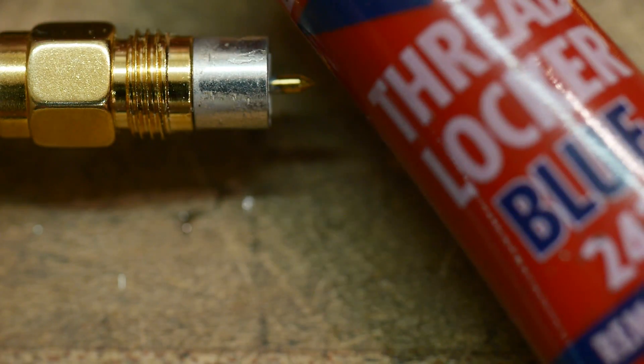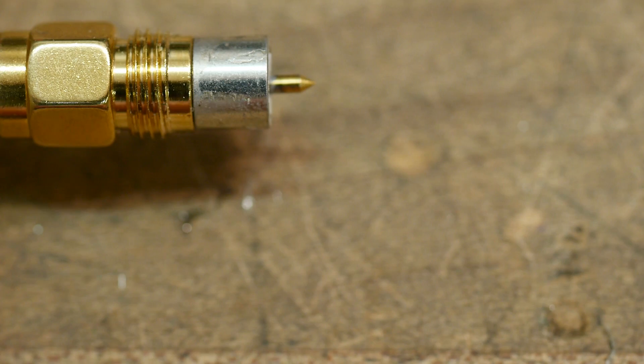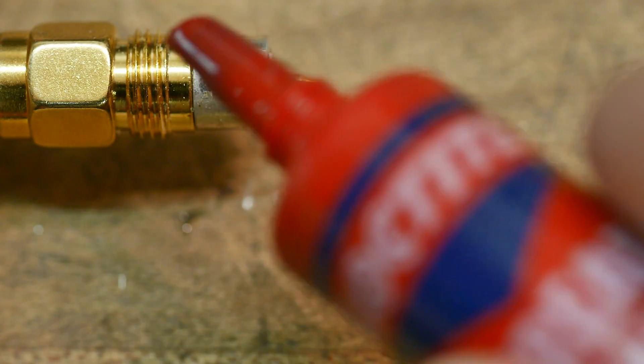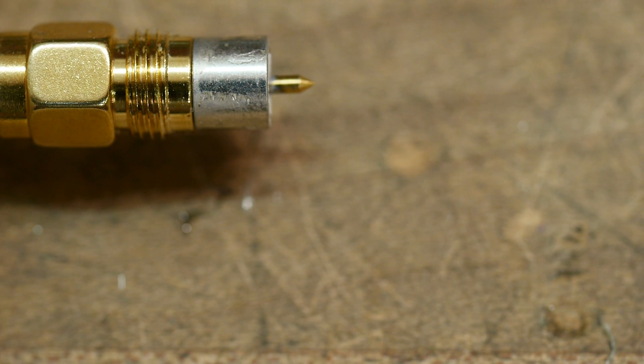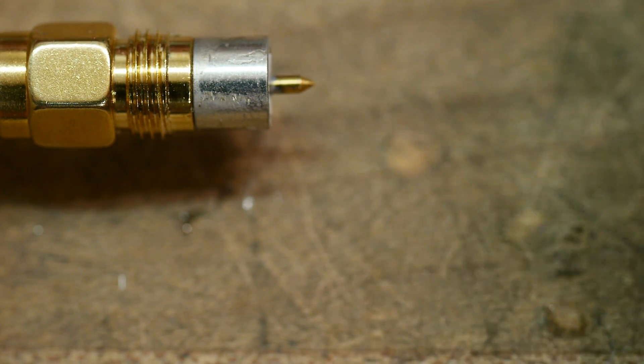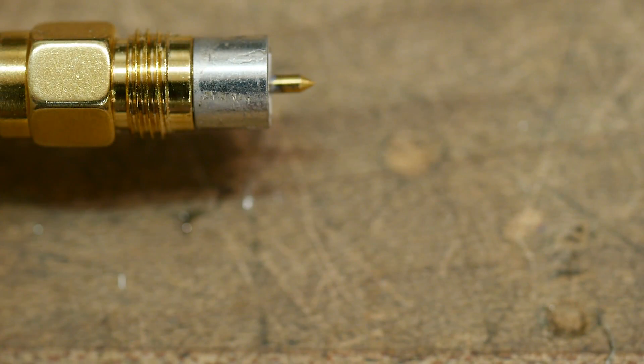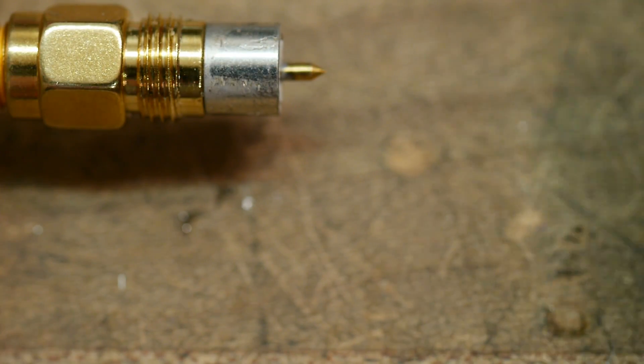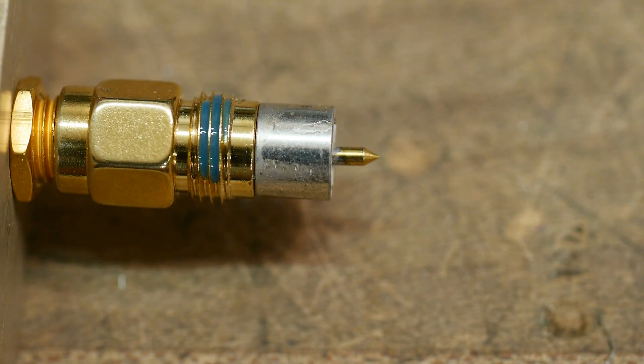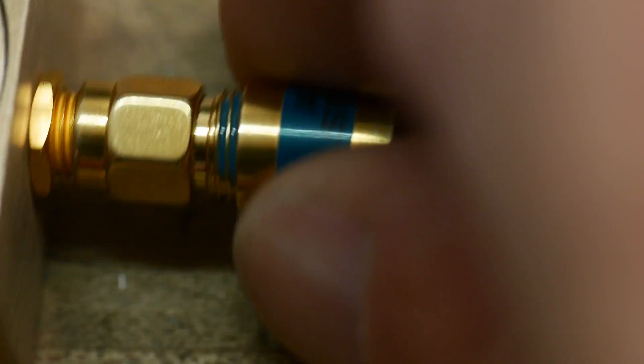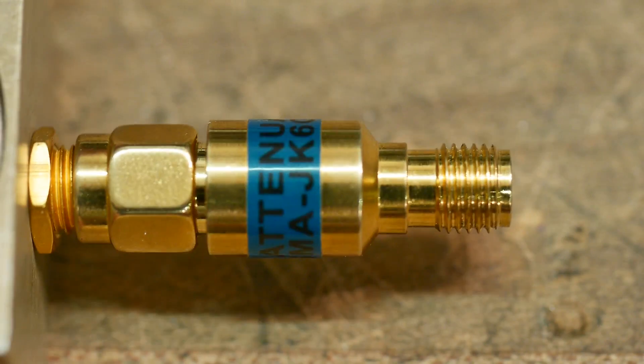And I've got some thread locker, Loctite blue. The blue stuff you can remove, the red stuff you have to heat up to remove. So I'm going to put a, oh so tiny, should I apply it? No, I'm going to apply it on something else and then move it over because I don't want to mess it up. I'll put a drop there. Yeah see, it's too big of a drop. I'll put a drop there and then I will transfer over some on a screwdriver here. Yeah, that's better. I think that will be plenty. And then screw this together, and then hopefully it will not come apart again.